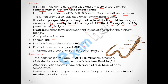Sperm has three parts: the head, midpiece, and tail. The total sperm count is about 100 to 115 million per ml of semen. If the sperm count is less than 20 million per ml of semen, it can cause male sterility — a condition in which the male is unable to produce enough sperm to fertilize the ovum and produce a zygote.